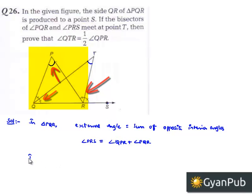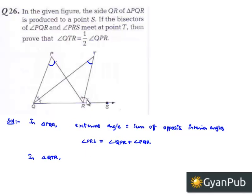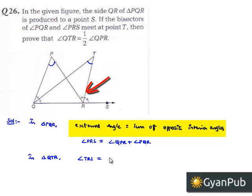Now, let us also consider triangle QTR. In this also, the external angle will be equal to the sum of two opposite interior angles, that is angle TRS is equal to angle TQR plus angle QTR.